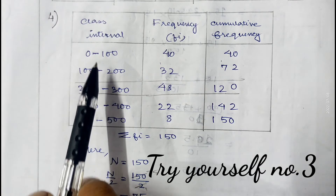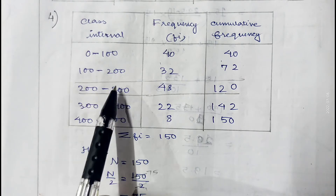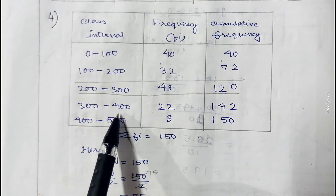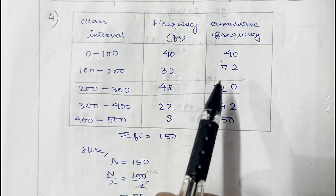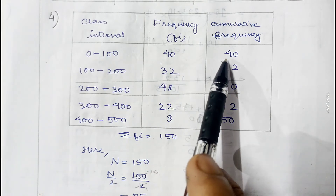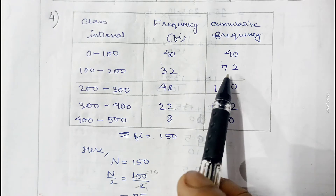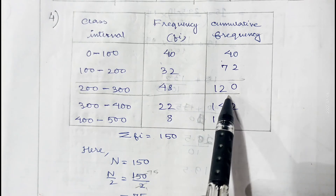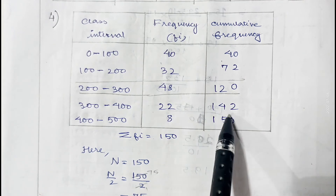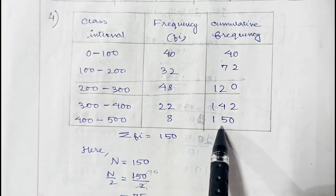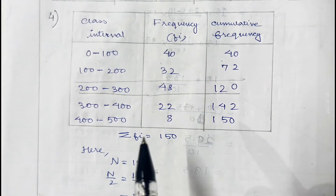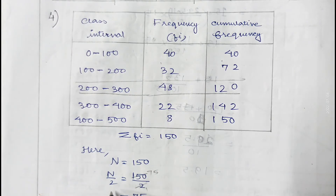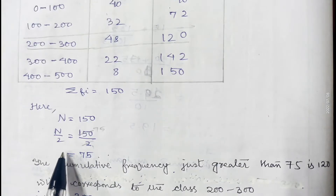Question 3 you can do yourself. In question number 4, the class intervals are 0 to 100, 100 to 200, 200 to 300, 300 to 400, and 400 to 500 with corresponding frequencies. Cumulative frequencies are: 40, 72, 120, 142, and 150. So summation fi equals 150, meaning n is 150, and n/2 is 75.